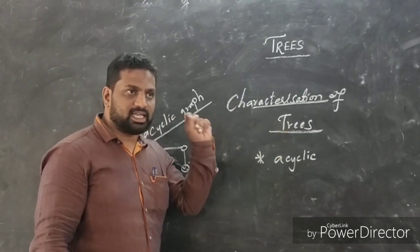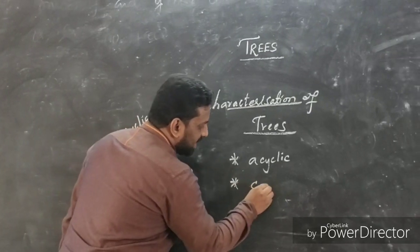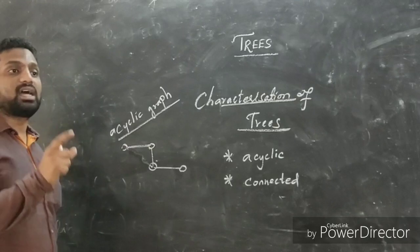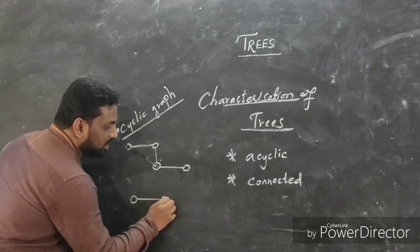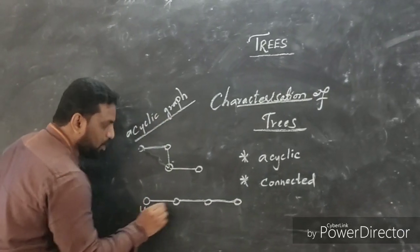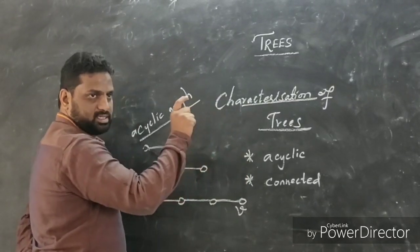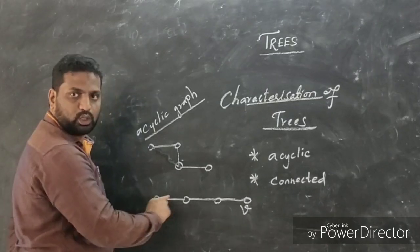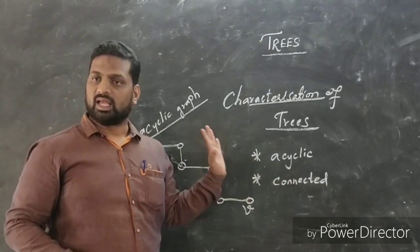The condition for a tree is that it is an acyclic graph as well as a connected graph. When a graph is connected, as we have seen previously, if there is a path from the first point to the last point without any disconnecting points, then it is called connected.